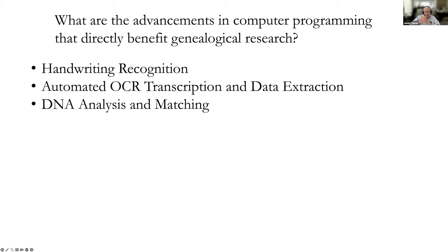A question from Kathy: she's never seen the ancestry people hints, just the leaf hints. Does she have to turn something on to see those? I'm not sure where they come from — I didn't turn on anything and I didn't add anything. They just started showing up and I don't know if there's something you need to do or if it's available to all users.